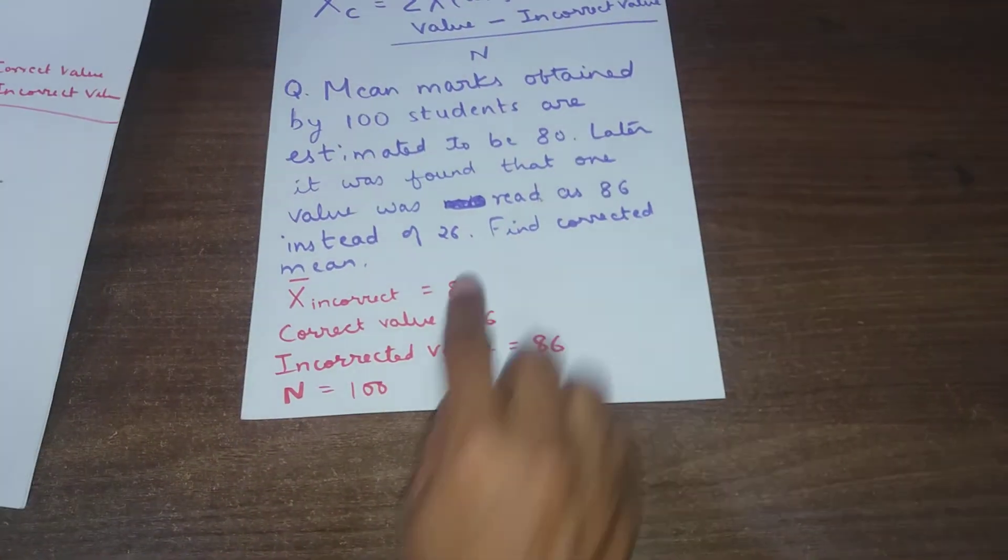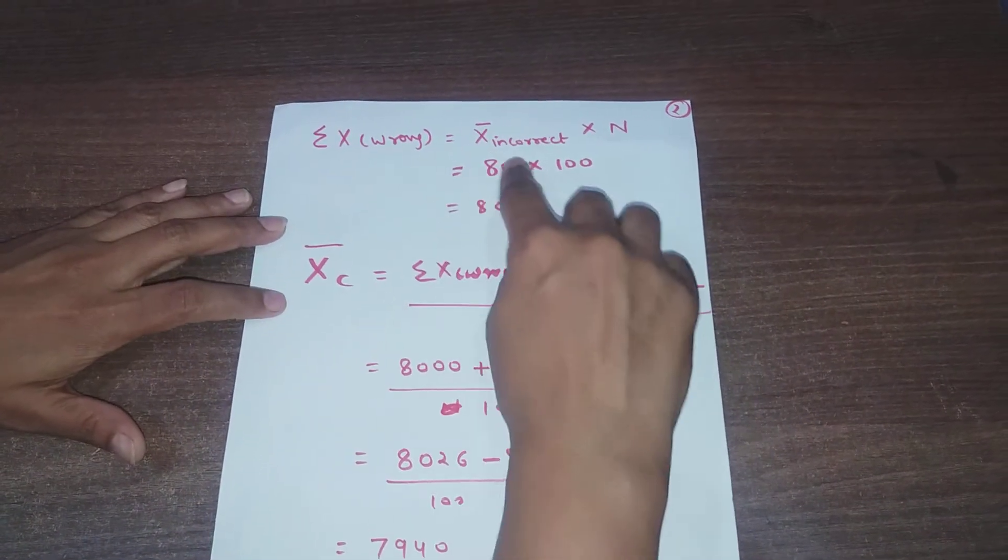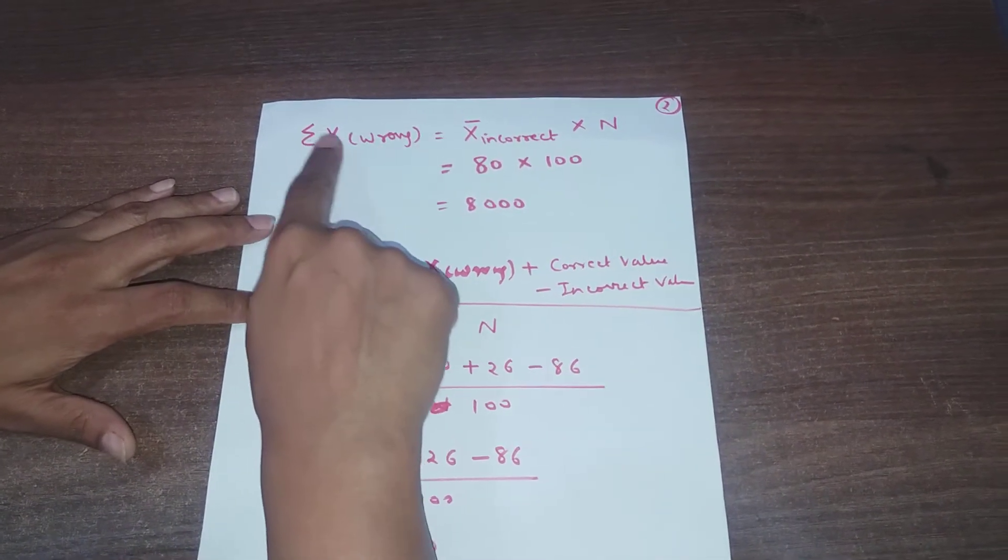x̄ incorrect was 80 and n is 100, so summation of x wrong equals x̄ incorrect times n, that is 8000.